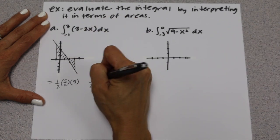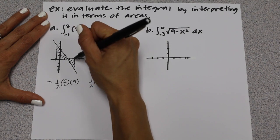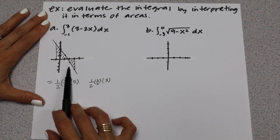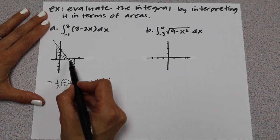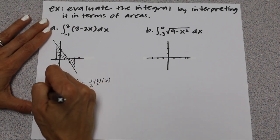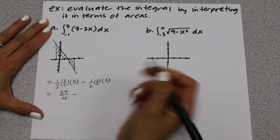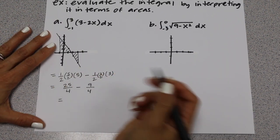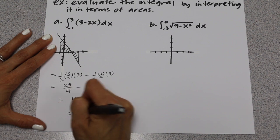The height of the right triangle is 3 units. This left triangle area will be a positive value, and the right triangle will be a negative value since it's below the x-axis, so we put a negative in front of that area. So we get 25 over 4 minus 9 over 4, which gives us 16 over 4, or a value of 4.